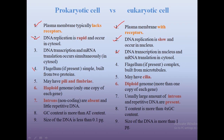In prokaryotic cells, the flagellum if present is simple and built from two proteins. In eukaryotes, the flagellum if present is complex and built from microtubules. Prokaryotic cells may have pili or fimbriae, while eukaryotic cells may have cilia. Prokaryotic cells are haploid with only one copy of each gene, whereas eukaryotes are mostly diploid with more than one copy of each gene.